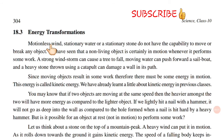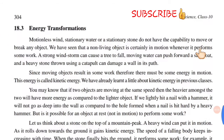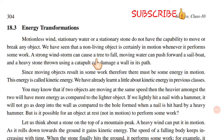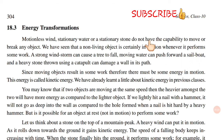Motionless wind, stationary water, or a stationary stone do not have the capability to move or break any object. We have seen that a non-living object is certainly in motion whenever it performs some work. A strong wind storm can cause a tree to fall. Moving water can push forward a sailboat, and a heavy stone thrown using a catapult can damage a wall in its path.